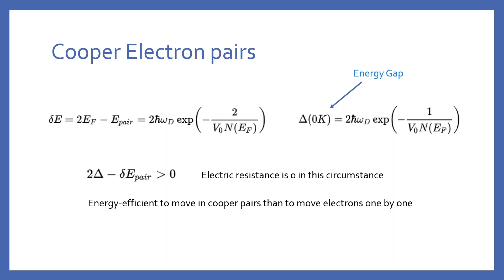Below the critical temperature, the energy gap of Cooper pairs is larger than the increased energy of Cooper pairs. Therefore, electric resistance becomes zero.